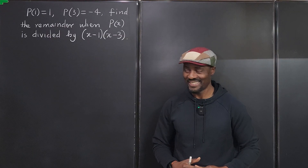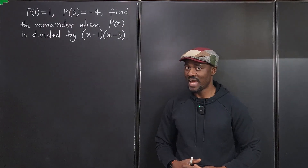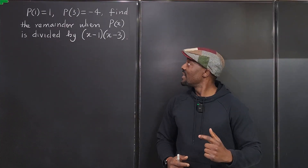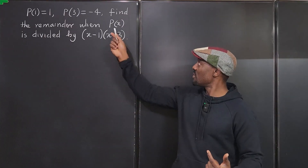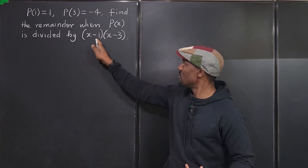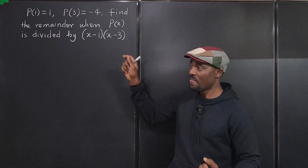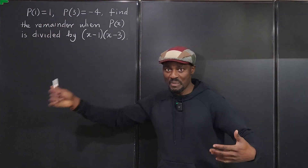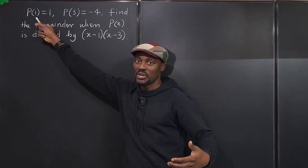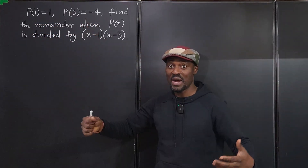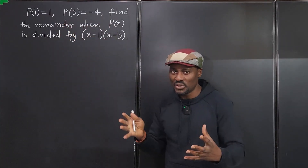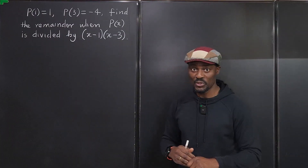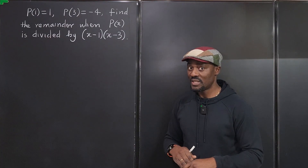Welcome to another video. Let's do some polynomial division and the remainder theorem. The question says we should find the remainder when a certain polynomial is divided by (x-1)(x-3). They gave us conditions: P(1) = 1 and P(3) = -4. Is this information sufficient to find the remainder when we divide by the product of the two factors? The answer is no.